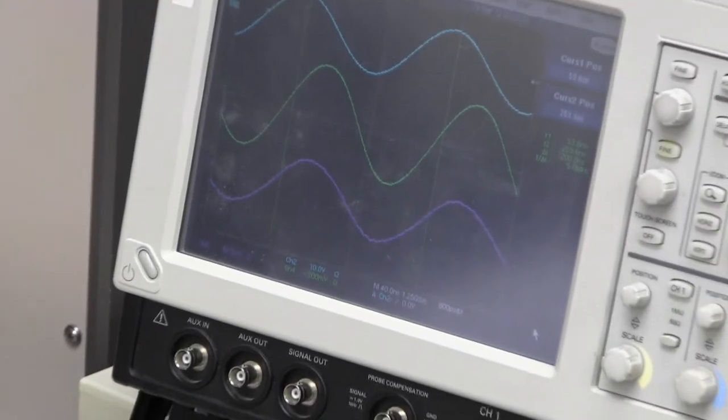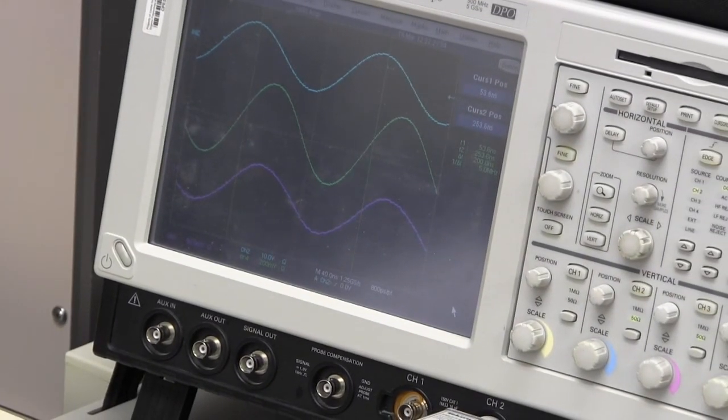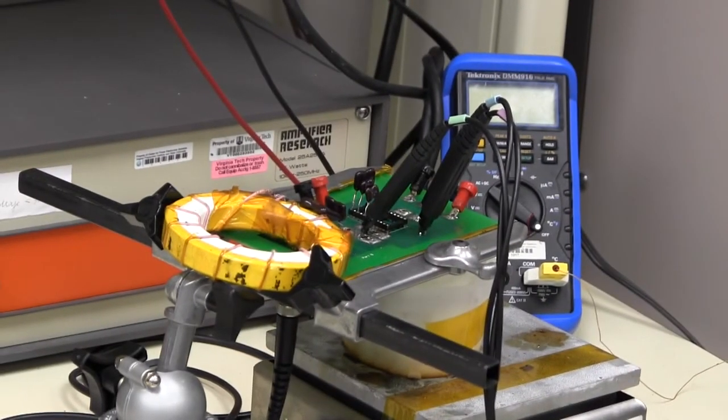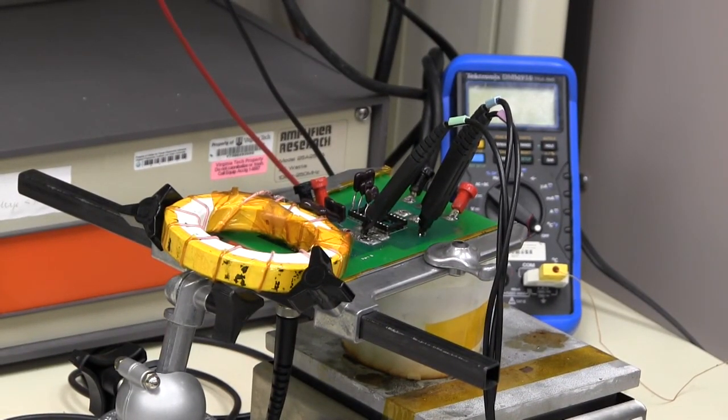We use three probes to observe the waveforms of voltages. On the scope, we use these three waveforms to calculate the core loss. With this measurement setup, we have the capability to test the high-frequency core loss up to tens of megahertz.